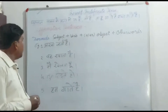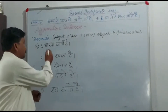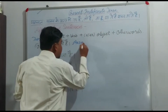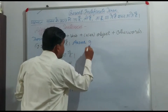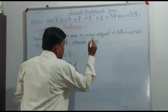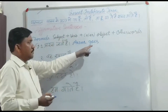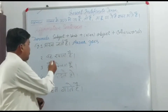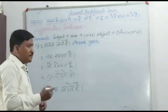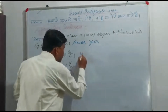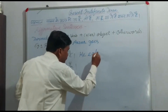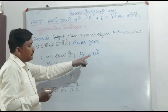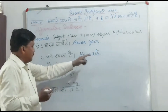Pehla example: 'Arna jaati hai' — Arna goes. Kyunki yeh hamara singular subject tha, isliye humne go ki first form mein ES joda. 'Vah khaata hai' — He eats. Yahan bhi eat ki first form mein ES joda, giving us 'eats'.